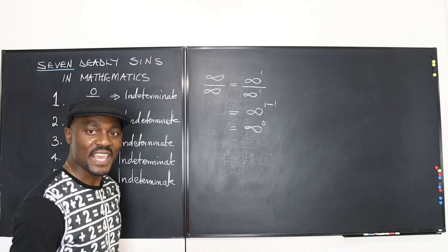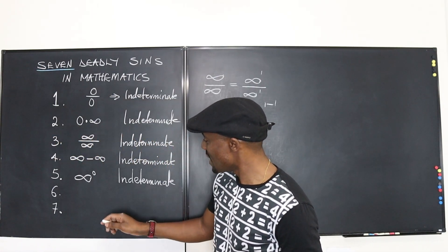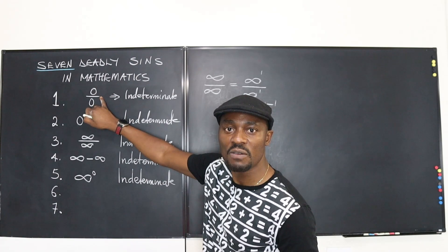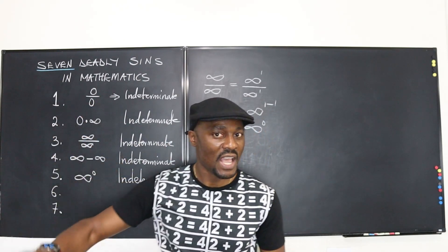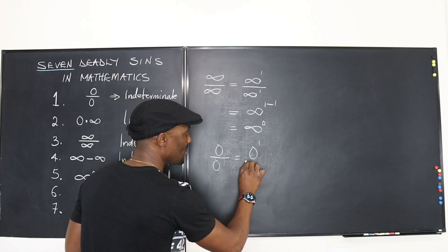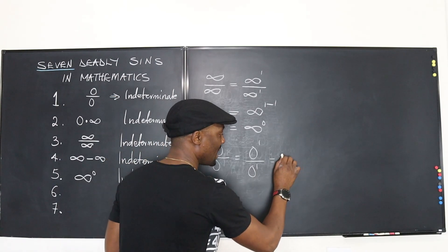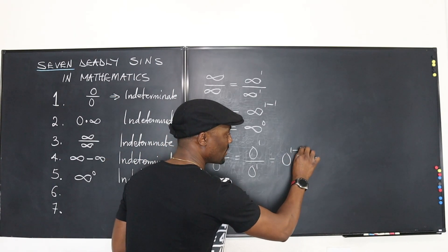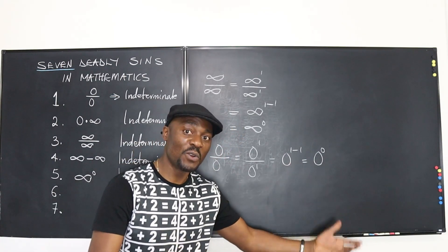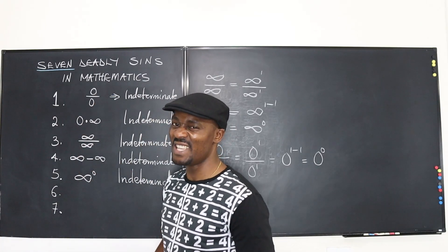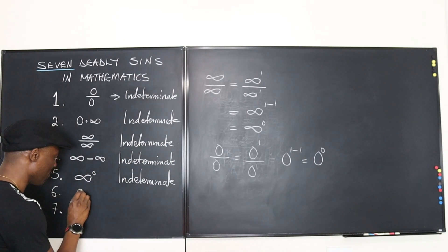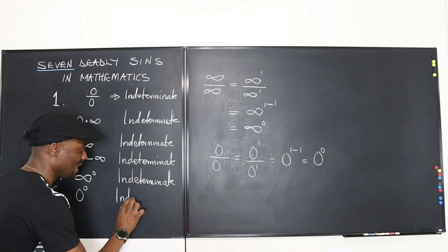It looks like we've explored everything except these two. What happened to infinity over infinity will also happen to zero over zero. We can say zero over zero is the same as zero to the first over zero to the first, which is zero raised to one minus one, which is zero to the zero power. So you cannot raise zero to the zero power — it still falls under the indeterminate form. Zero to the zero power is also indeterminate.